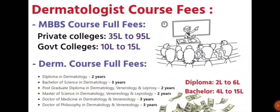Regarding fees: MBBS in a private college costs around 35 to 95 lakhs, while in a government college it is around 10 to 15 lakhs. For a Diploma in Dermatology, fees are 2 to 6 lakhs, and for a Bachelor's degree it is 4 to 15 lakhs. The cost is a bit higher, but once you complete the course you can easily earn back the money.